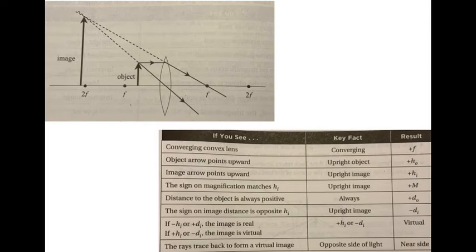What will happen if the object is inside of F? So for convergent lenses, if the object is inside of F, an interesting phenomenon occurs.